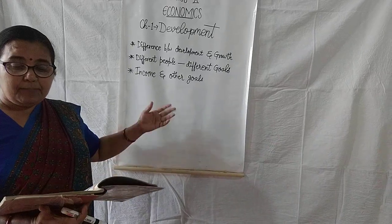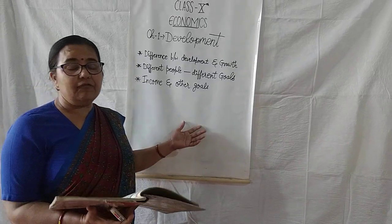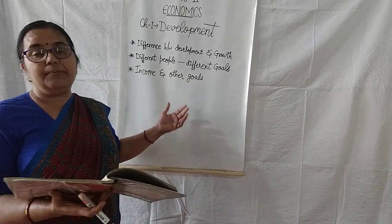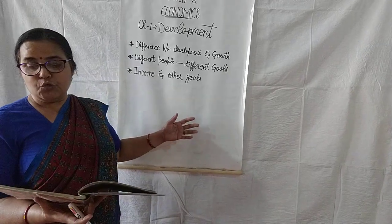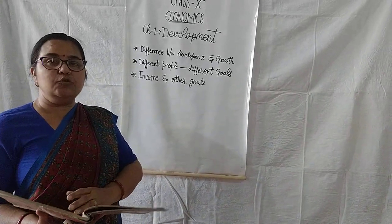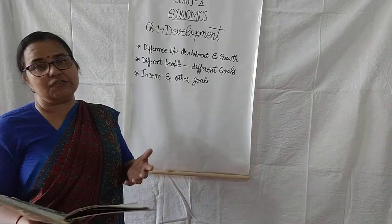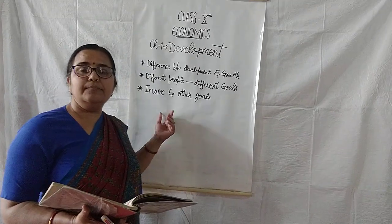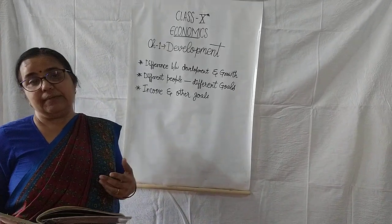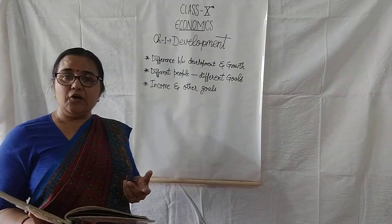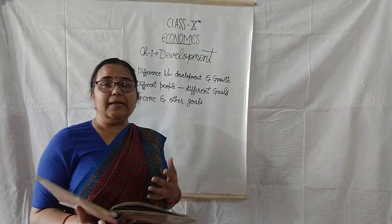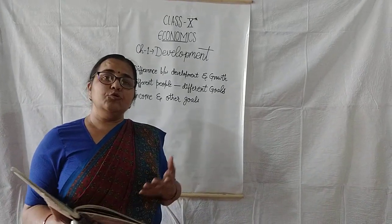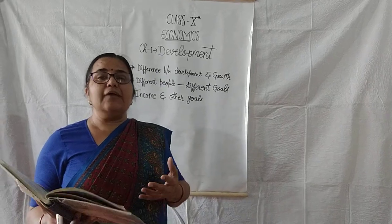Ab next aapka topic kehta hai ki different people have different development goals and different meanings of development. Jaise aapki book mein page number five par bold letters mein definition hai. So you can study that definition to understand the table on page number four. So our third topic is income and other goals. Income — yani ki hum jo paisa kamate hain — paisa bhi, it is a very important thing for our life. Hum apni life improve kar sakte hain by income, hamari life achchi ho jaati hai. We can buy more and more goods and when we are able to do that, our life becomes more happy.